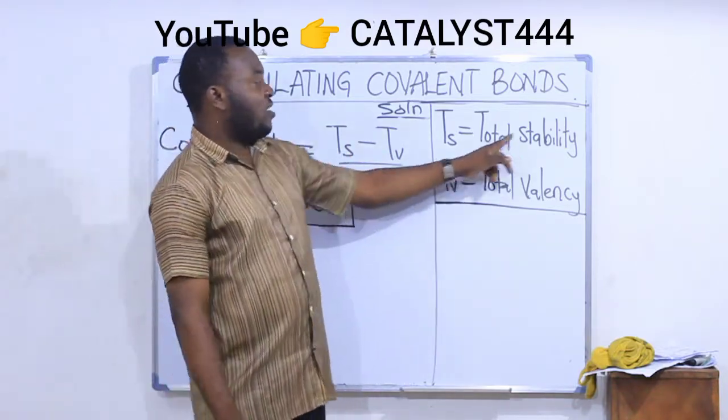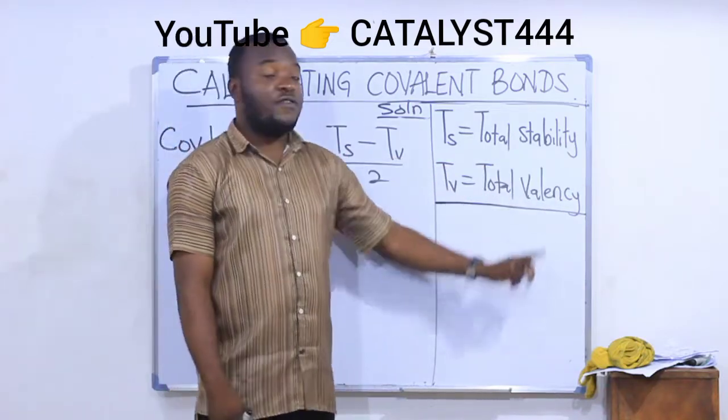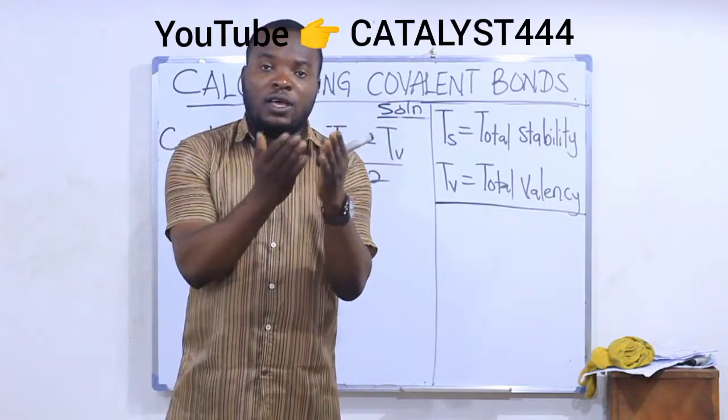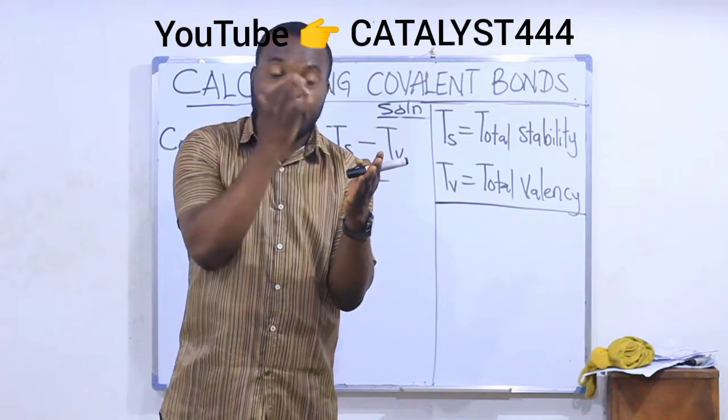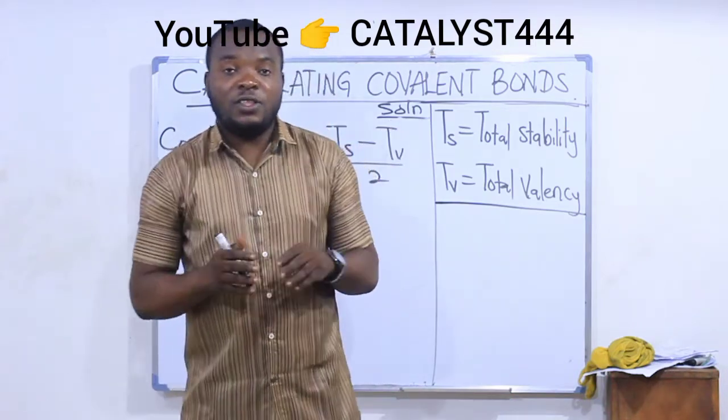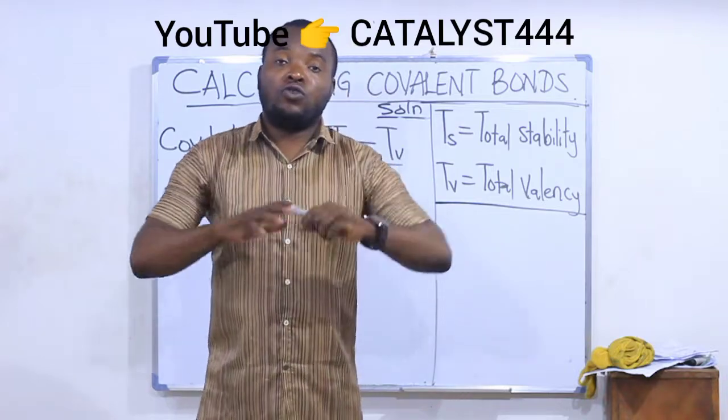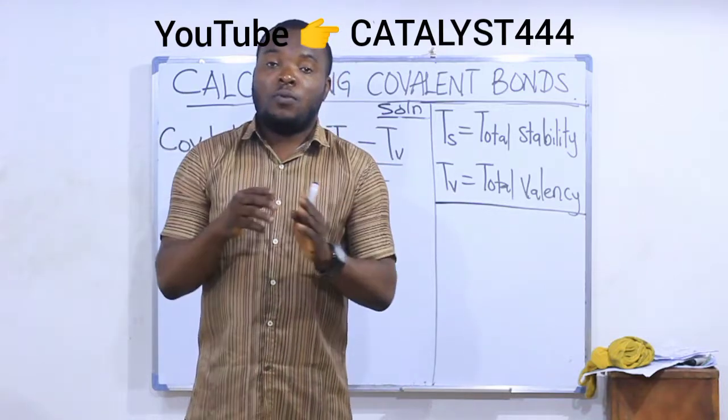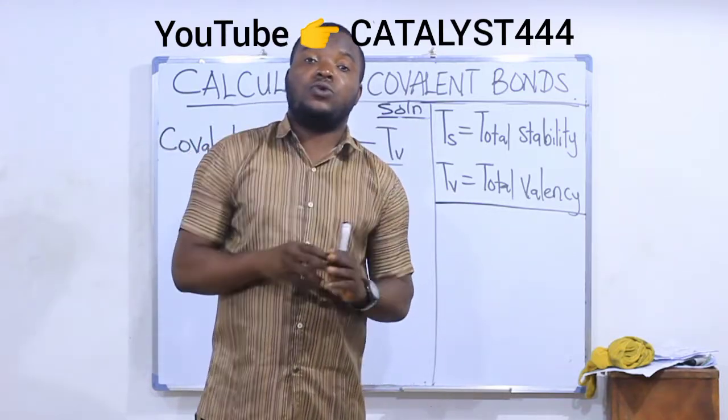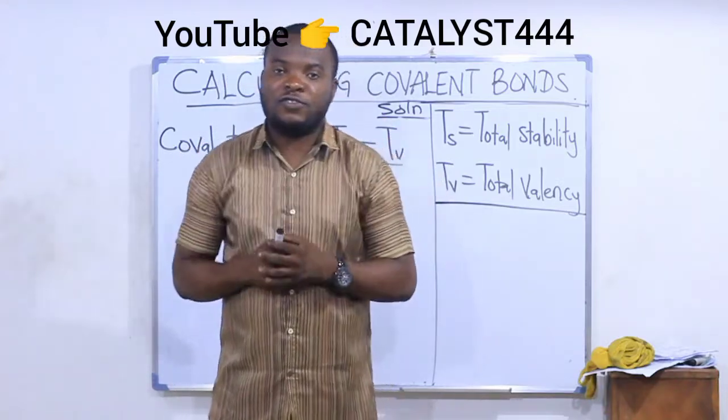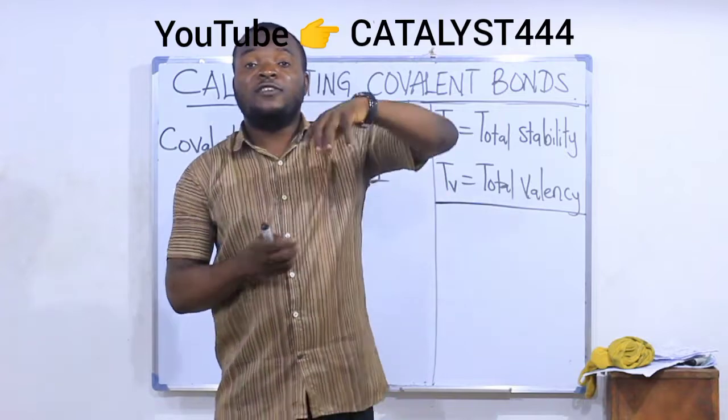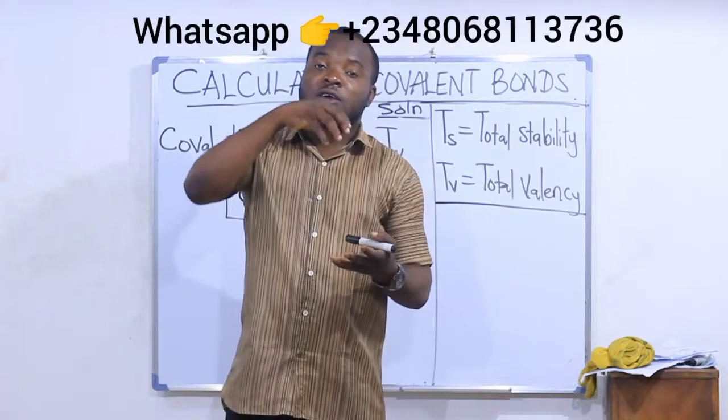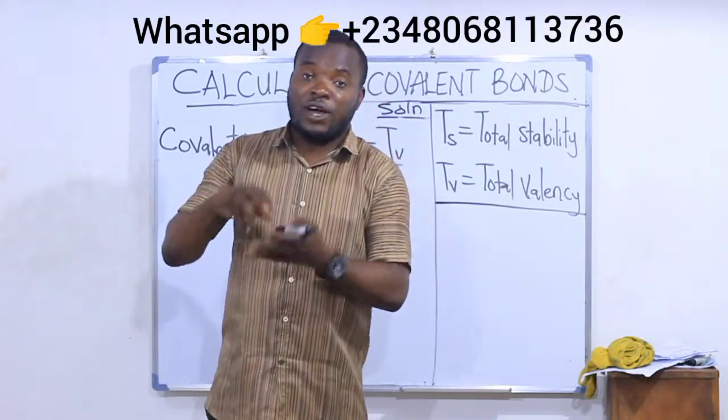TS stands for total stability while TV stands for total valency. Now what is total valency? Assuming that I have a compound whose formula is XY, like sodium chloride is NaCl, your total stability there will be stability of X plus stability of Y, but your total valency is valency of X plus valency of Y. For sodium chloride, my total stability will be stability of sodium plus stability of chlorine, while my total valency will be valency of sodium plus valency of chlorine.